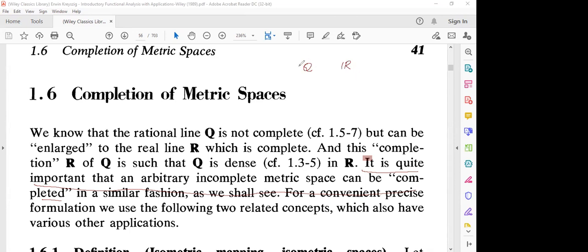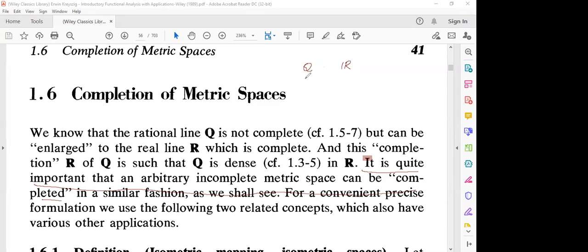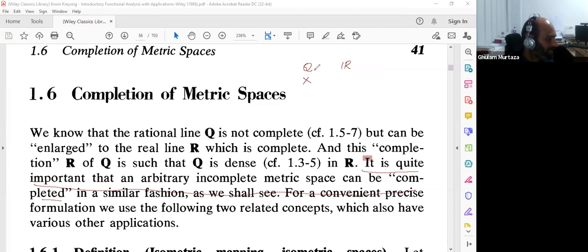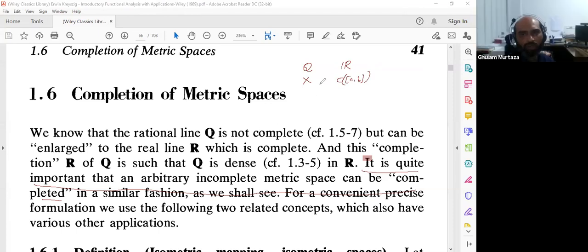R is the completion of Q. If we talk about the polynomial space, this completion will be C[a,b], the continuous functions on [a,b].